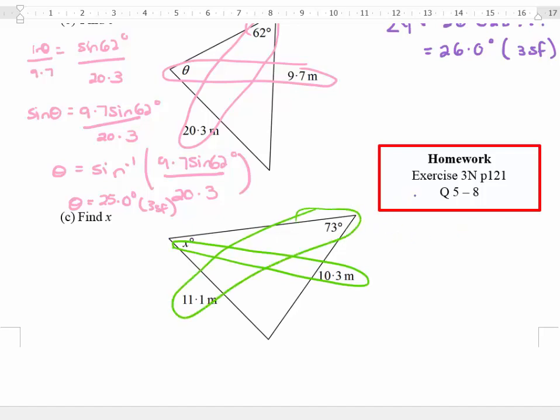So in this case I'm trying to find x. So I'm going to write that down as sine x degrees over 10.3 equals sine 73 degrees over 11.1. So I get sine x equals 10.3 sine 73 degrees over 11.1.